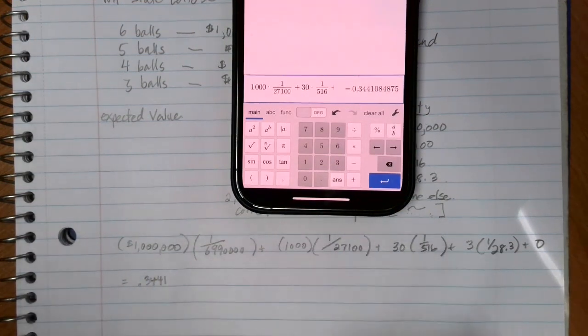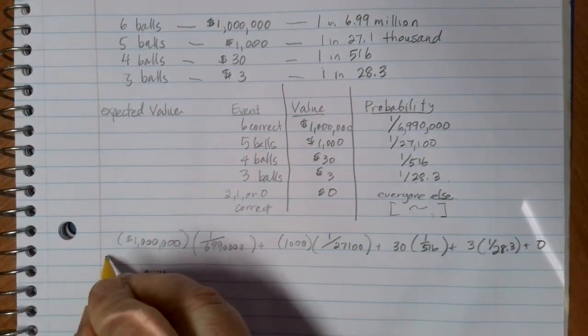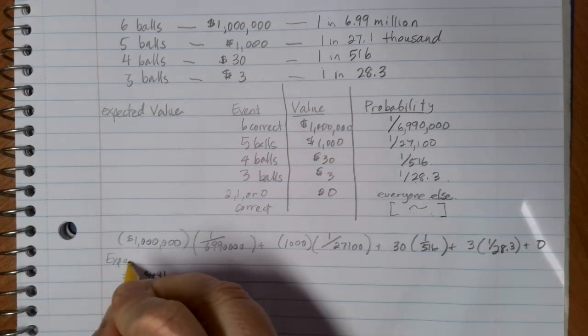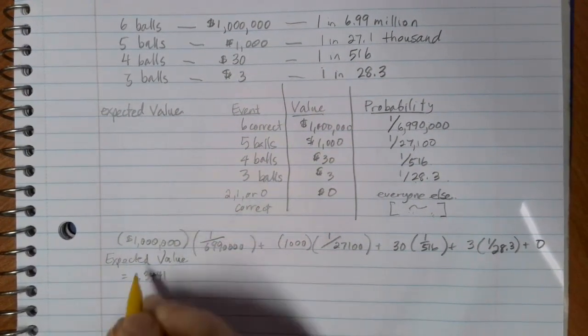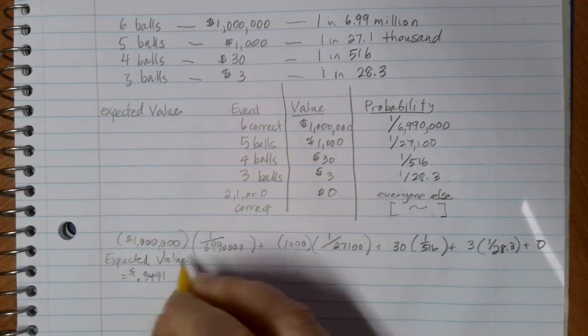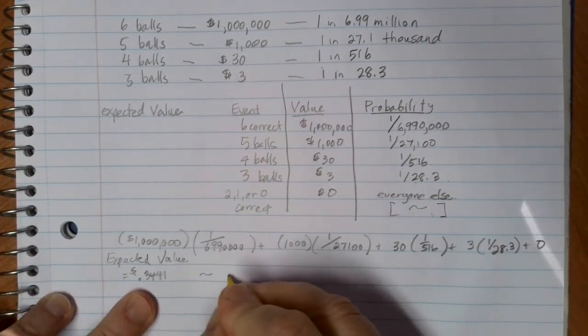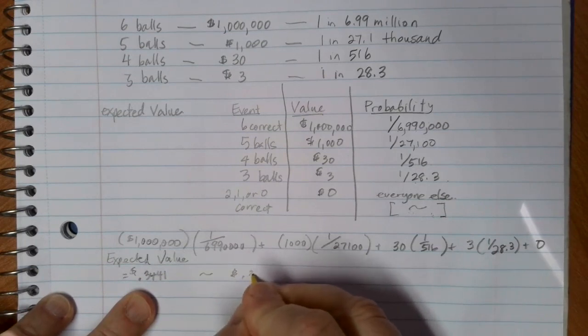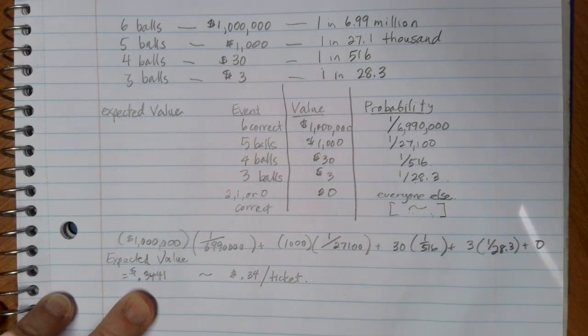So what does this mean? My expected value if I played the lotto lots and lots of times is that I would earn not $34, but 34 cents per ticket purchased.